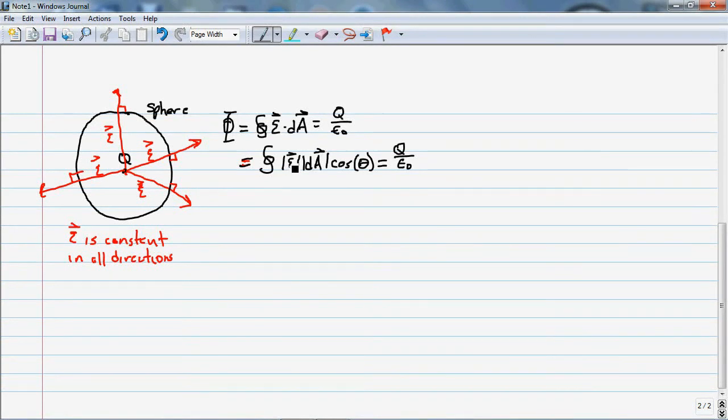Now E is a constant so I can bring E out, we'll just have it as a value here. Cosine of zero is one so I don't have to worry about that and I'm going to have the integral of the differential area is equal to Q over epsilon naught.